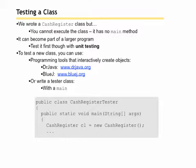We wrote the CashRegister class but we can't execute the class. It has no main method. We have to instantiate an object of the class inside the main method in order to run it. We call this unit testing if we test a specific unit before we combine it with a larger class.